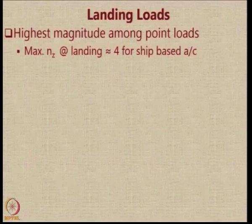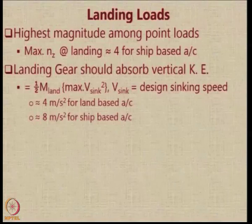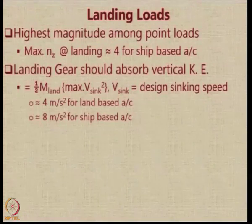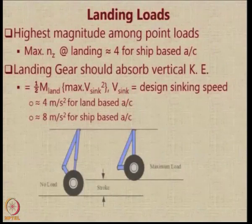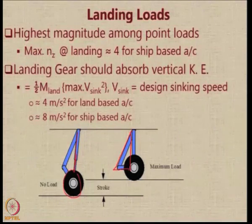For a ship-based aircraft, the vertical load factor at landing is assumed to be 4, because the landing gear operates in a scenario where the aircraft is coming down and the ship is also moving up. The landing gear is supposed to absorb the vertical kinetic energy acting on the aircraft. The effective sink speed is a very big factor affecting the landing gear load — the sink speed is assumed to be 4 meters per second for land-based aircraft and 8 meters per second for ship-based aircraft. When there is no load the landing gear is extended, and under the maximum load condition the landing gear should be able to withstand the loads.